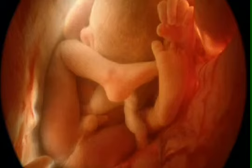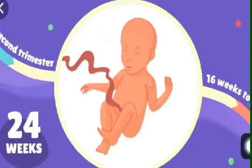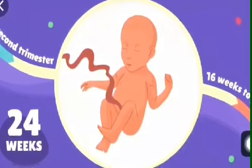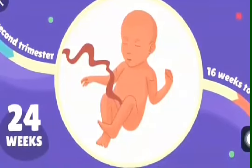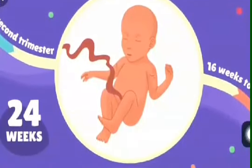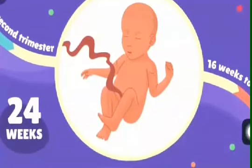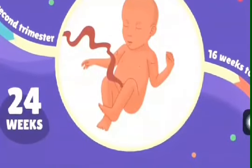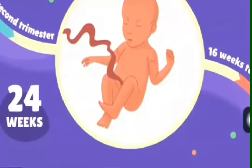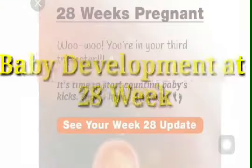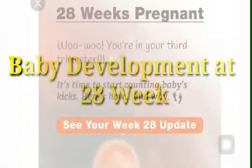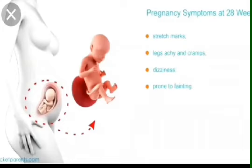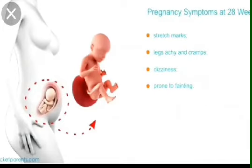Baby's development at 24th week: The baby weighs 1.4 pounds and can respond to sounds. The baby's inner ear develops at this 24th week. At 28th week, the baby normally weighs about two and a half pounds and has developed to the point that if born prematurely for any reason, the baby can survive.